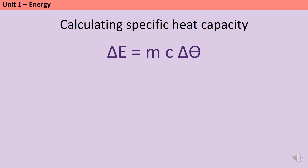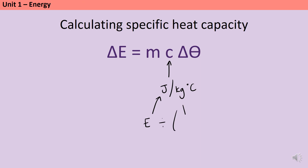Quite often we don't want to calculate the amount of energy required — we want to use the amount of energy in order to calculate the specific heat capacity. So we need to rearrange this equation. This is straightforward if you remember that the units for specific heat capacity are joules per kilogram degree C. So rather than algebraically rearranging, you can simply take the number in joules, divide it by the number in kilograms multiplied by the number in degrees C.